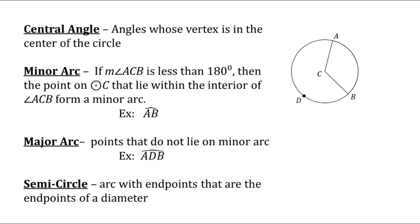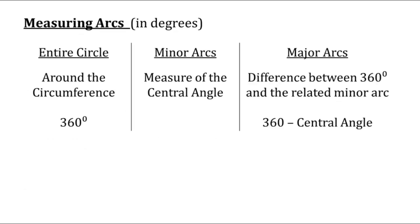And then we have a semicircle, which is an arc with endpoints that are the endpoints of the diameter — so an arc with a measure of 180 degrees. When measuring arcs, the entire circle is 360 degrees. Minor arcs use whatever the measure of the central angle is, and major arcs are found by doing 360 minus the minor arc.